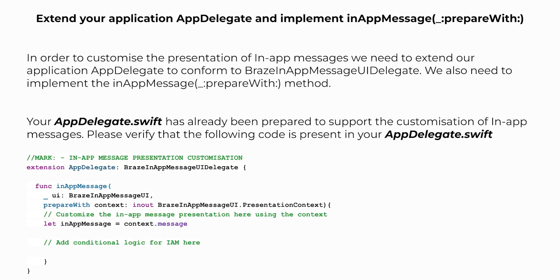In order to customize the presentation of in-app messages, we need to extend our application's app delegate to conform to the Braze in-app message UI delegate. We also need to implement the in-app message prepareWith method. Your AppDelegate.swift file has already been prepared to support the customization of in-app messages. Please verify that the following code is present in your app delegate file.